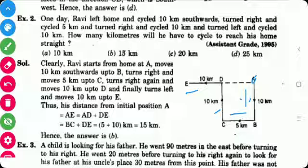So how many kilometers will he have to cycle to reach his home straight? His home is this A and he is now in position E. So how many distances here? This is 10 kilometers and this is 5. Means 10 plus 5 means 15 kilometers he have to cycle. So the answer is B.